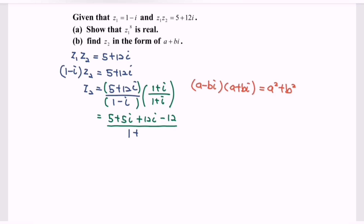Since b is equal to 1, b squared gives us another 1. Simplifying: 5 minus 12 gives negative 7, and 5i plus 12i gives 17i. The denominator is 1 plus 1 equals 2. So the value of z sub 2 is equal to negative 7 over 2 plus 17i over 2.